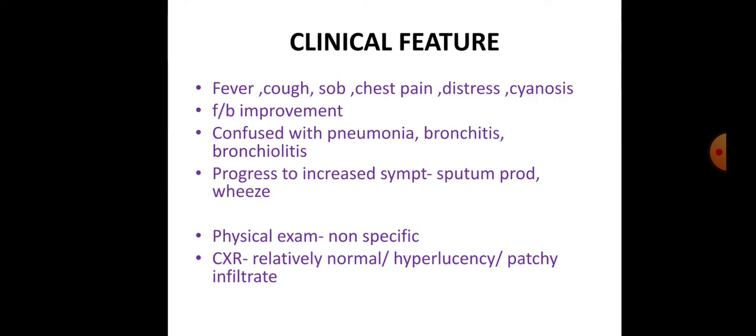Clinical features include fever, cough, shortness of breath, chest pain, distress, and cyanosis. After a period of having these symptoms, the patient tends to improve, and at this point bronchiolitis obliterans may be confused with pneumonia, bronchitis, or bronchiolitis. After that, there is progression to a severe form, and new symptoms develop such as sputum production. Physical examination is non-specific.